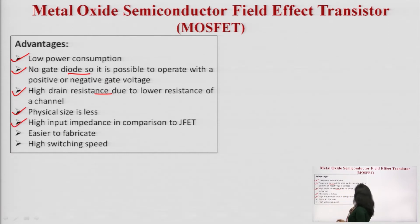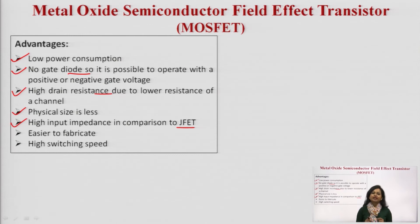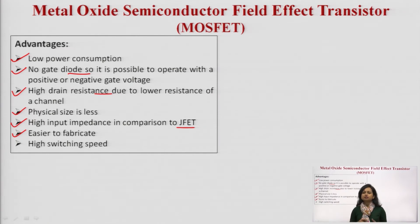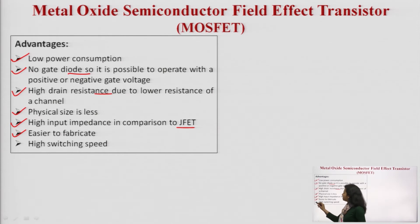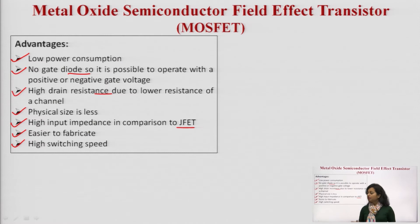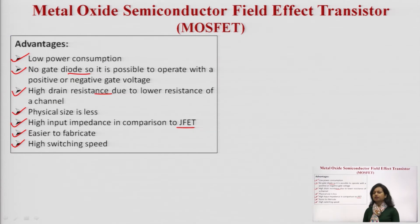High input impedance in comparison to JFET, and this high input impedance is only because of the insulation provided between the gate and the substrate body. Easier to fabricate — manufacturers can design MOSFET on a large scale; its design is simple and can be easily fabricated. The switching speed is also very high, which is required for electronic circuitries. If it takes a lot of time to turn on and off it is not beneficial, so MOSFET gives very high switching speed.